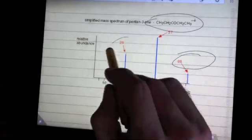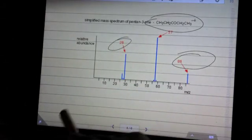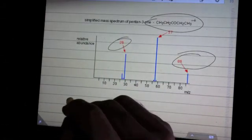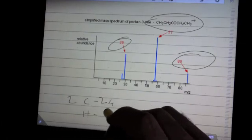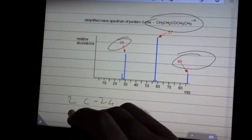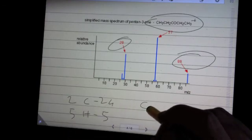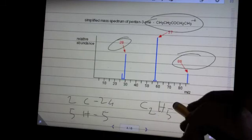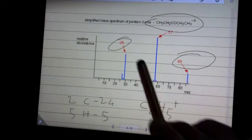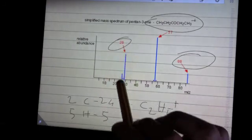The fragments - this fragment here, what adds up to 29? Well, two carbons is 24. How many hydrogens do you need? You need five. So it must be five hydrogens. Therefore it must be C2H5. And positive, because it's a fragment and to make the line here it has to have a positive there.